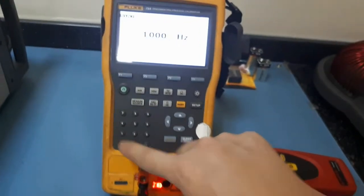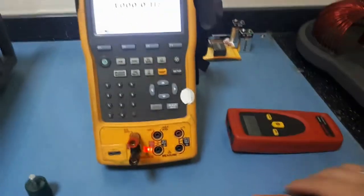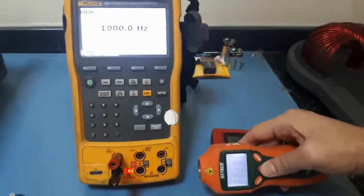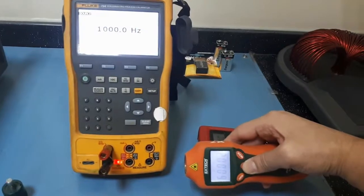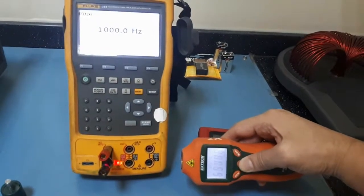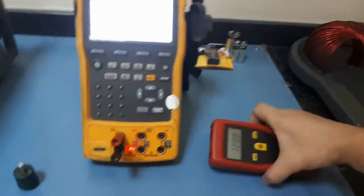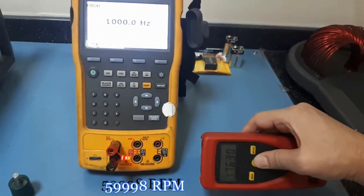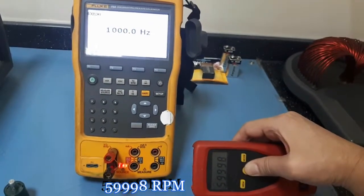1,000 hertz. Equivalent to 60,000 rpm. Check. 60,000. 60,001. That's 1. 59,998. Still okay.